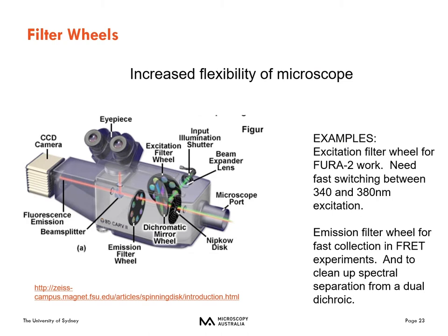For really fancy filter arrangements, you can use filter wheels — excitation, dichromatic mirror, or emission filter wheels, or some combination — to enable fast switching. This gives you nice spectral separation while still collecting images fairly quickly in time. For example, an excitation filter wheel is useful for FURA-2 work requiring fast switching between 340 and 380 nm, while an emission filter wheel is useful for FRET experiments or cleaning up spectral separation when imaging live cells.